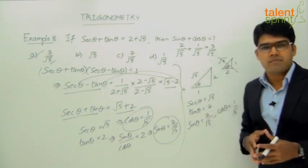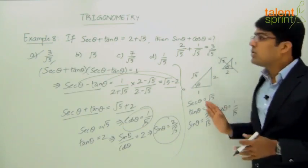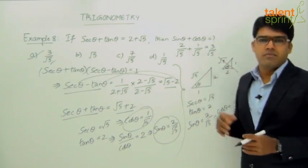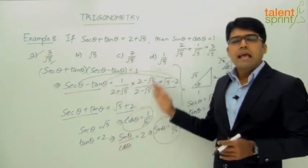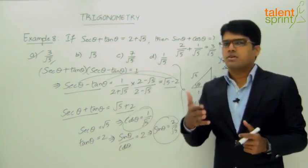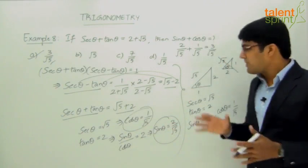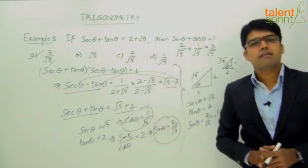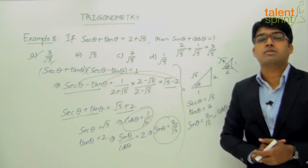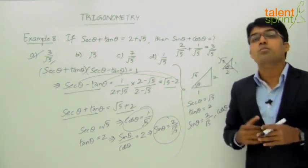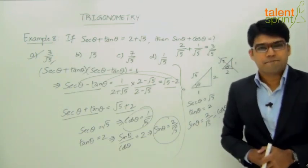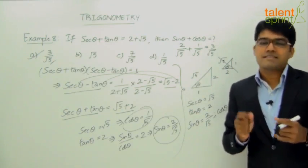Though the right triangle method looks easy, it can get complicated if you are not careful with assigning side values. Follow this method only if you are confident in your calculations. Otherwise, go with the regular algebraic method. If you want to use shortcut methods in the exam, practice extensively because the more you practice, the easier it gets and the better your chances of finding the right approach quickly.